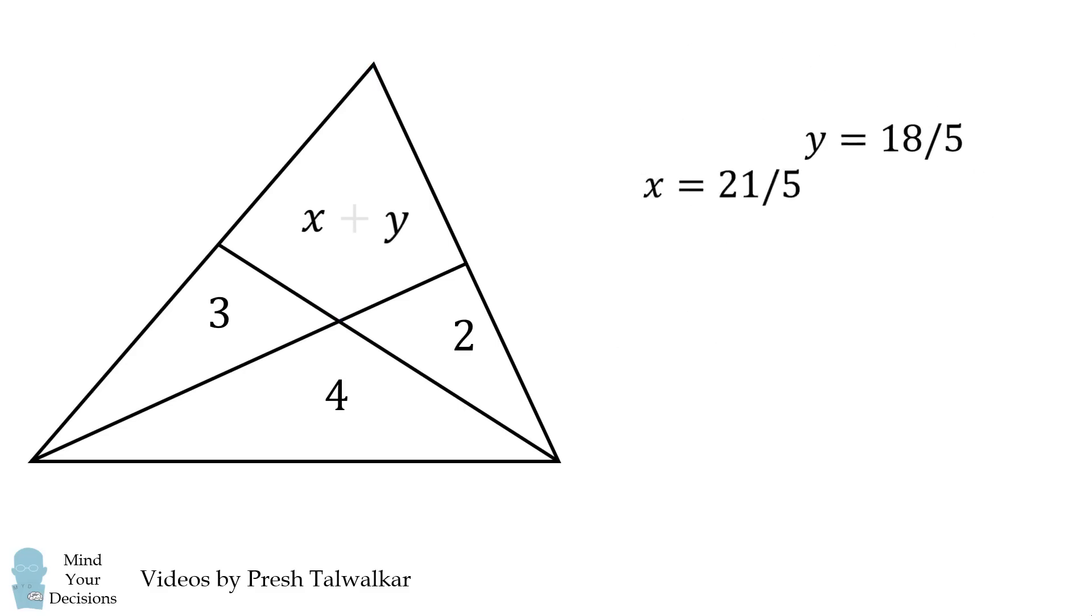So we have values for x and y, and remember, we want to solve for x plus y. So the area of this quadrilateral is equal to x plus y, which is 39 over 5, or 7.8, and that's our answer.